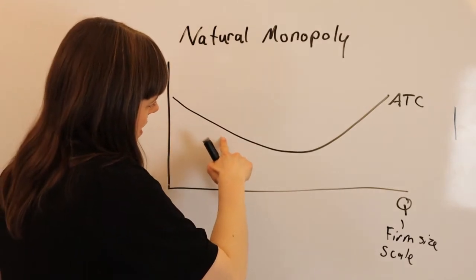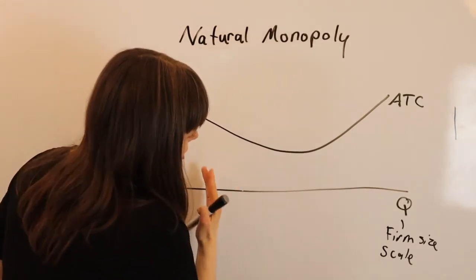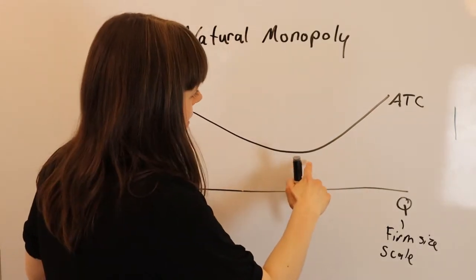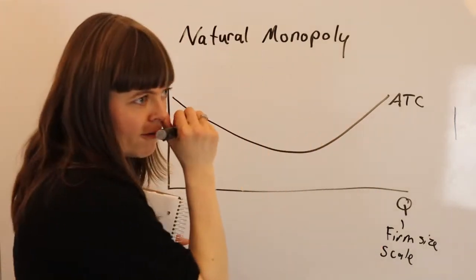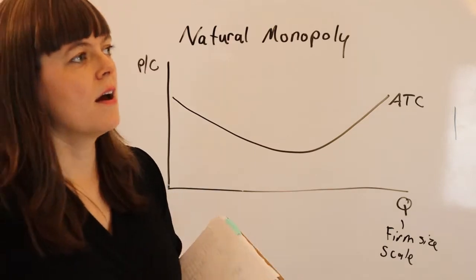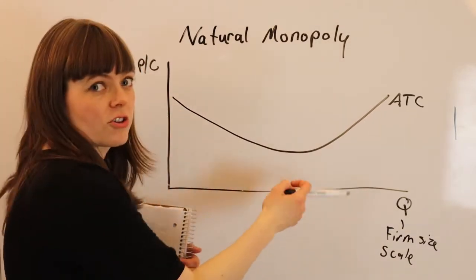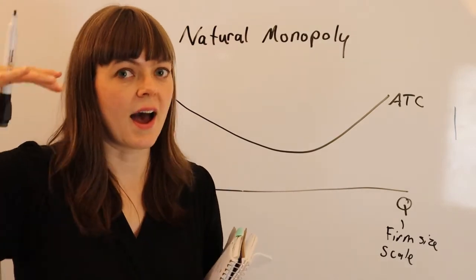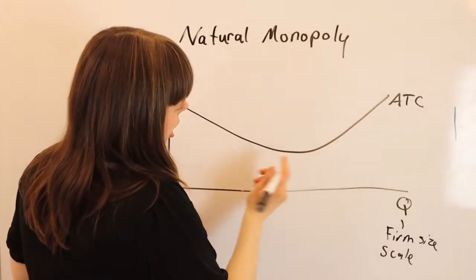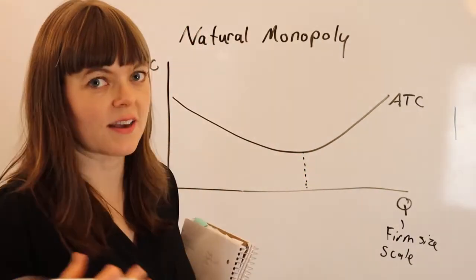So for that reason, firms often have this factor where the bigger the firm is, the lower the average total cost. And eventually costs are going to go up if you've hired all of a particular type of input. Maybe you need scientists or some type of specialized worker. Eventually you're going to hire out all of those and you're going to have to raise the wage really high to hire more of those. So eventually total costs are going to go up.